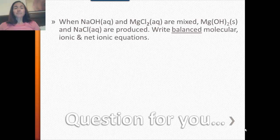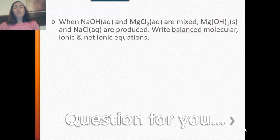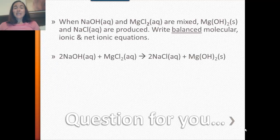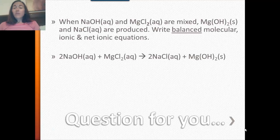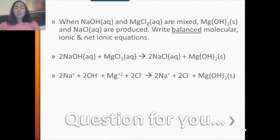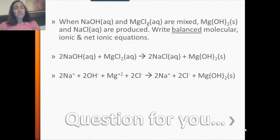Let's try another one. In this problem you're given a word sentence for the reaction, and you have to write the molecular equation and balance it, then write the complete ionic equation and net ionic equation. It looks like a double replacement reaction. Here is the molecular equation — it just needed to be balanced, with a coefficient of 2 in front of sodium hydroxide and a 2 in front of sodium chloride as a product. To write the complete ionic equation, take the aqueous compounds and split them into ions: 2 sodium ions and 2 hydroxide ions; 1 magnesium and 2 chloride ions. Sodium chloride on the product side is also aqueous with a coefficient of 2 — don't forget that.